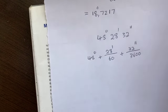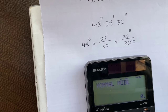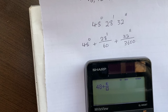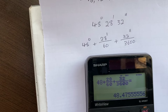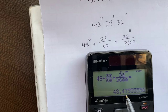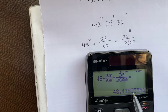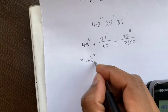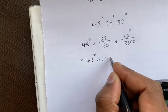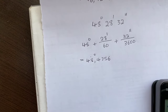Punching this into the calculator: 48 plus 28 divided by 60, plus 32 divided by 3600. The answer is 48.4755 degrees. Rounding the fourth decimal to the nearest thousandth gives 48.4756 degrees.